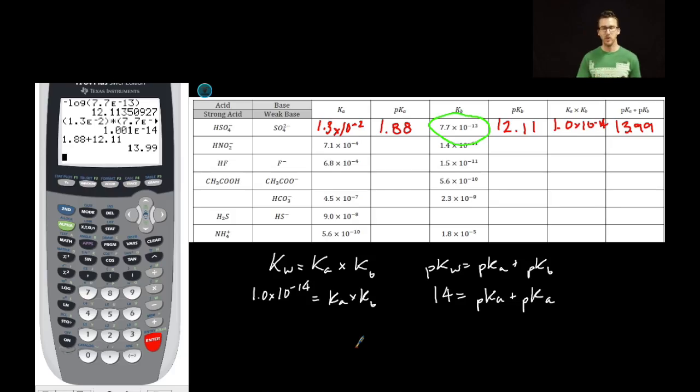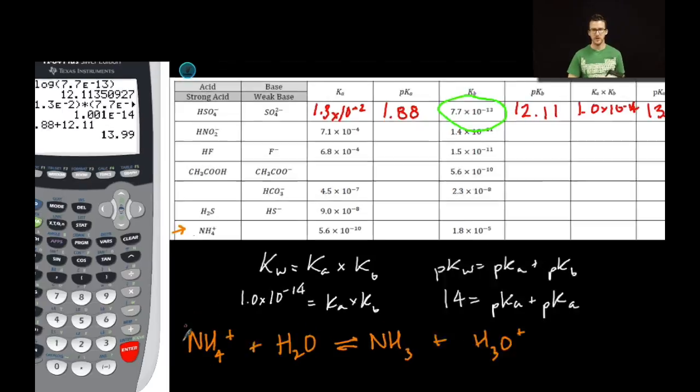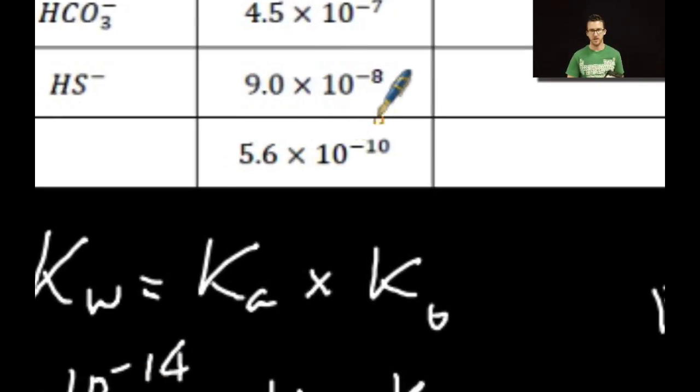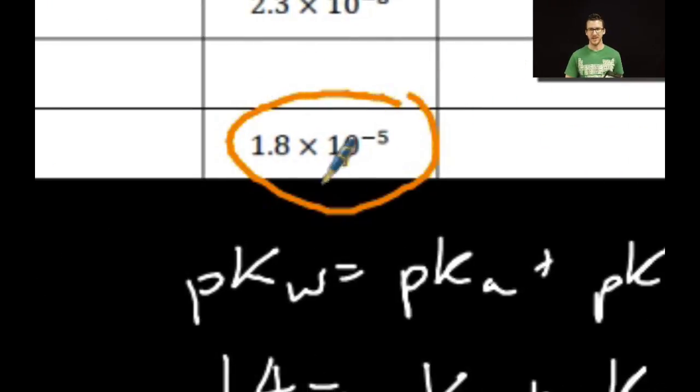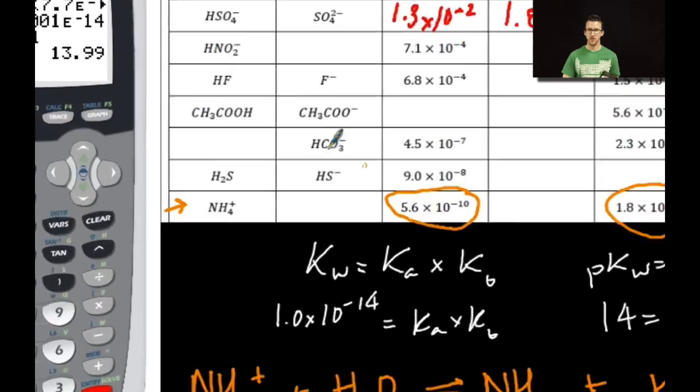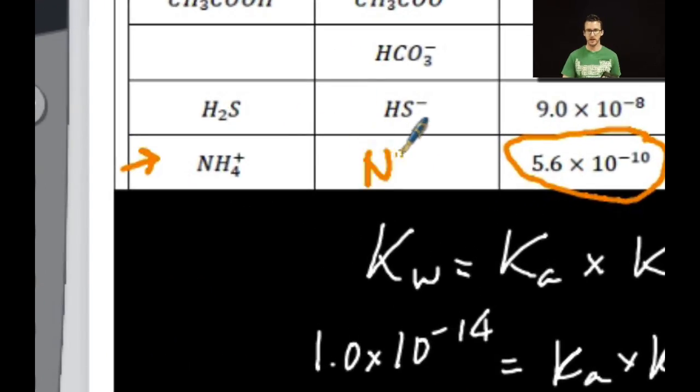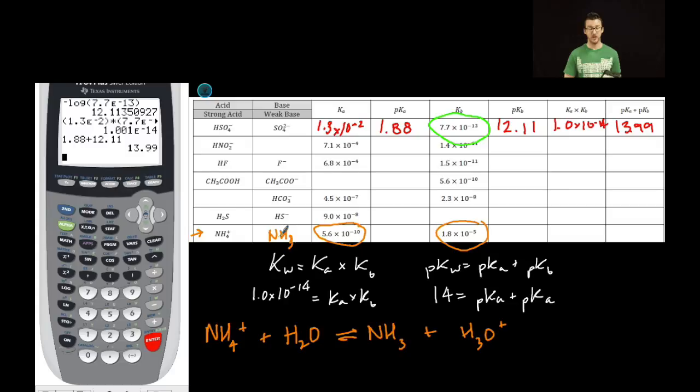I want to do one more example here. Let's take a look at this one. Here, I've got the ammonium ion acting as an acid. When I place it in water, I'm going to create an equilibrium situation in which I form ammonia NH3 and hydronium ion. Notice here that I'm provided with my Ka for ammonium and the Kb for the ammonia. First thing I'm going to do is simply throw in the ammonia to clarify that that's my conjugate base.